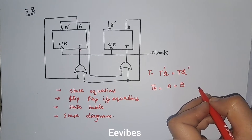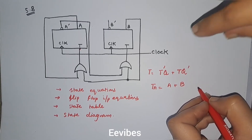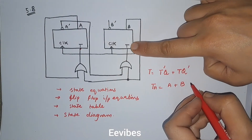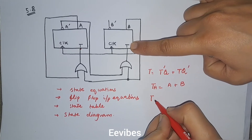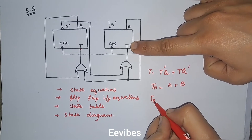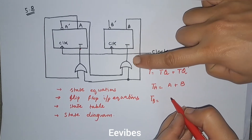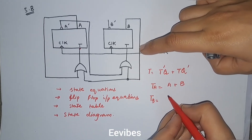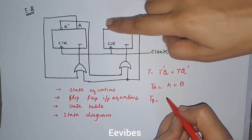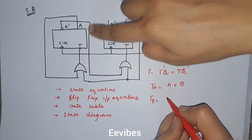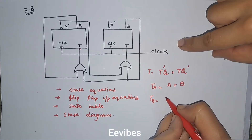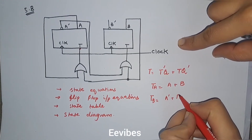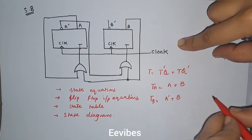Similarly, if you look at the second flip-flop, you can clearly see that T_B is actually the OR of A complement and B, so you can write it as A' + B.